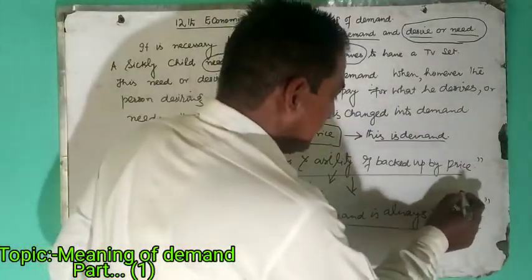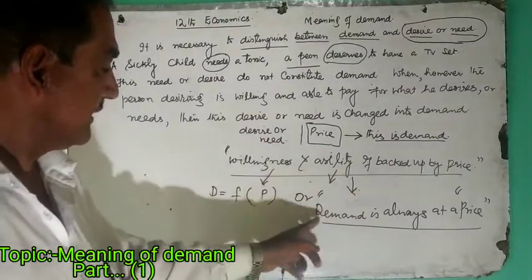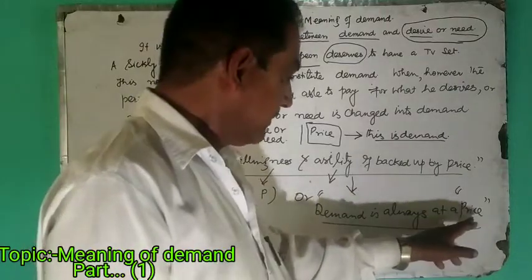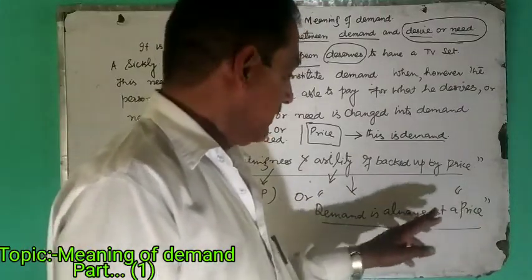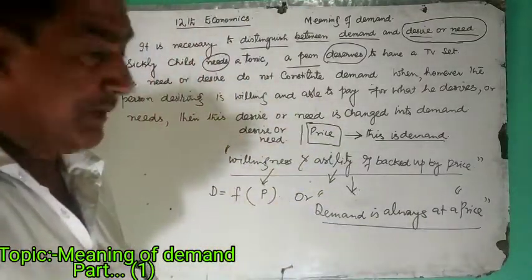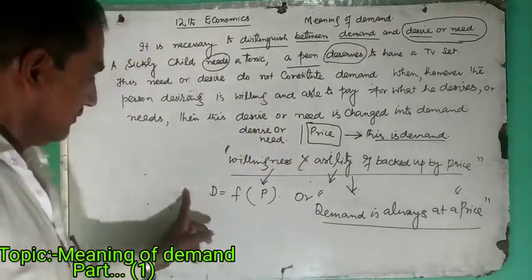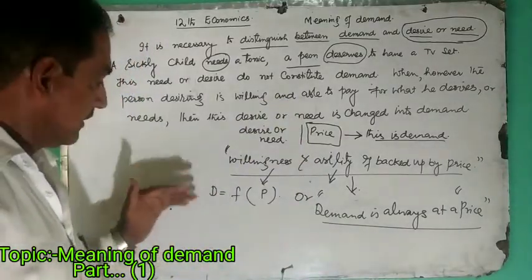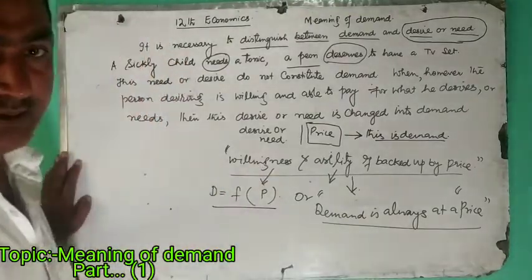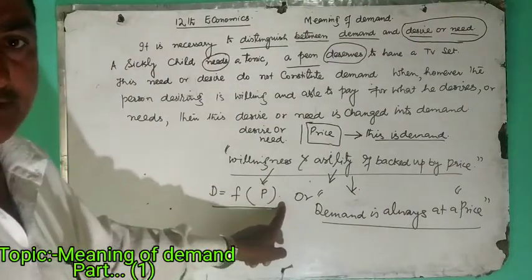If there is no price, if the person has no ability to pay for the price of the commodity, we don't say that this is demand. Once this person has ability, once this person is willing, when this willingness and ability go together, we say that this is demand. Mathematically or symbolically, we can write this in an equation: D is a function of P. Therefore, D directly depends on what we call price.